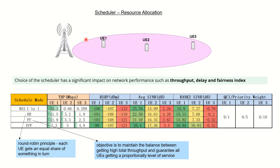We are taking one example where we have three users connected to one particular cell, and we are examining their signal strength, their quality in terms of signal-to-interference-noise ratio (SINR), and MIMO. We then look at how these different scheduler modes work.